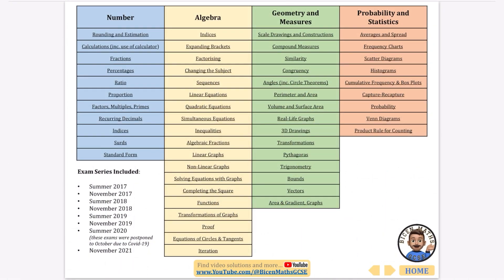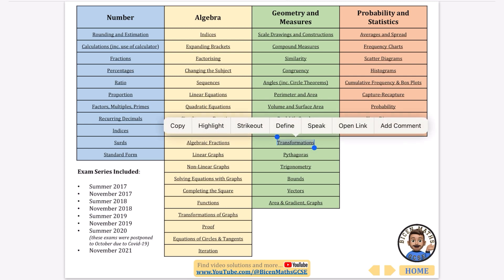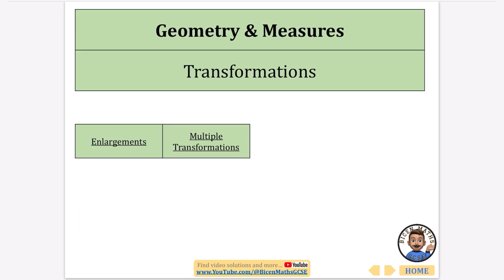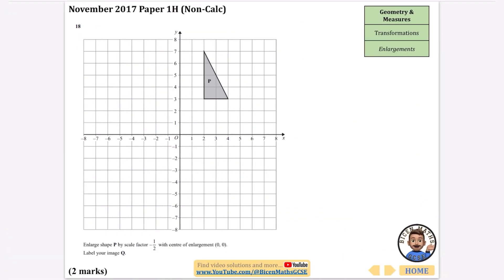In this video I'm going to be covering every exam question that has ever been asked, and this time it's going to be about transformations — things like rotations, reflections, and all that kind of stuff. They seem to ask a lot of questions about enlargements, and other ones involve lots of transformations at once. I'm going to split this video into two parts, starting with all the enlargement questions. This PDF is always linked in the description if you want to follow along.